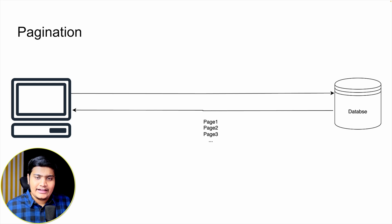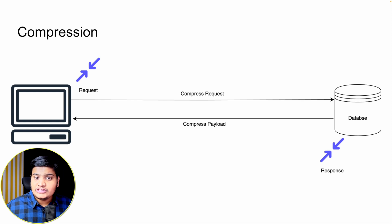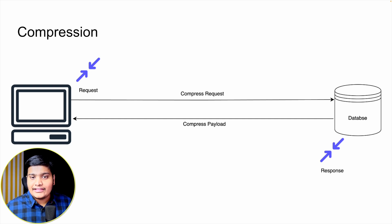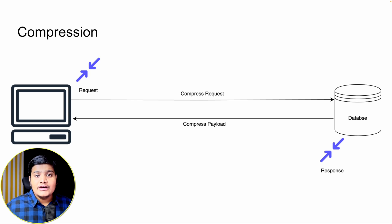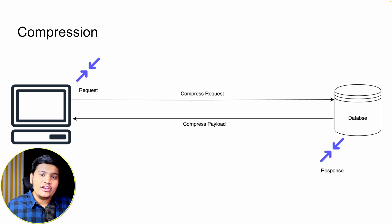The next optimization is compression. There are many algorithms available where you can add compression for your API. Whatever data is passed as a request payload or returned as a response, the server can compress it and the client will decompress it to display the data. For example, if you have 300 KB of data to pass as a payload, compression can reduce it to a much smaller chunk. This improves API performance significantly, and there are different compression libraries available to help.